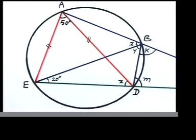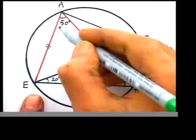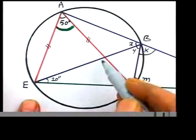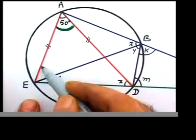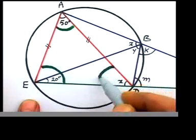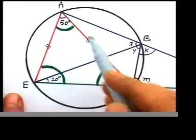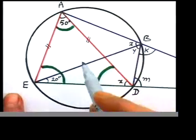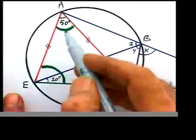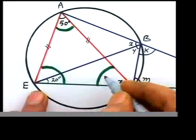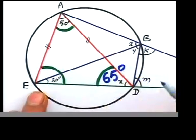Let's attack the isosceles triangle first. The top angle is 50°. Ignore the extended line — it's not part of the triangle. Those two base angles must be equal. The sum of the three angles is 180°, so take away 50° from 180° and you're left with 130°. Divide that into two equal parts: that gives 65°.